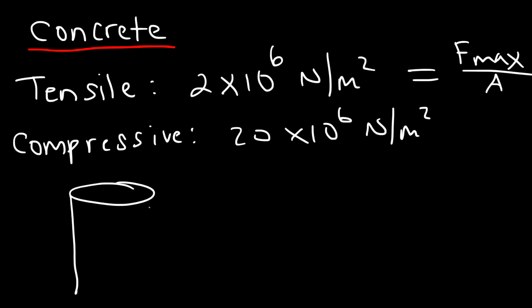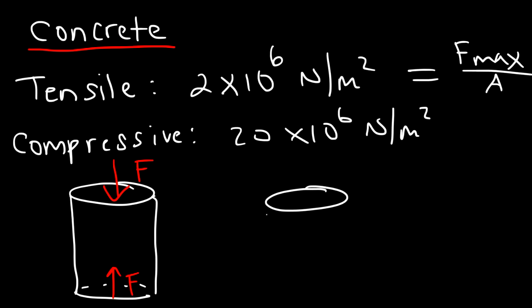Notice that concrete's compressive strength is stronger than its tensile strength. Concrete is very difficult to compress — it's strong in compression. However, if you try to stretch concrete and pull it apart, it's weaker in that direction. So it's much easier to pull apart concrete than to compress it. Concrete is very useful if you're putting weight on it, but it's not as strong when you try to stretch it.